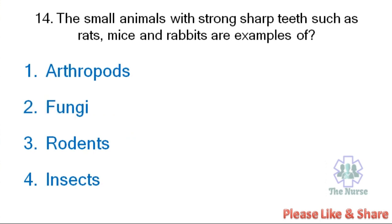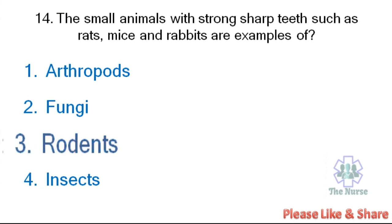Next question. Small animals with strong sharp teeth such as rats, mice, and rabbits are examples of: Arthropods, Rodents, or Insects. The correct answer is Rodents.